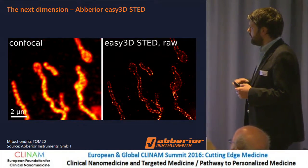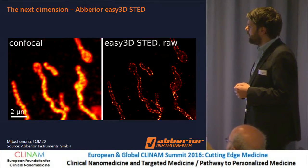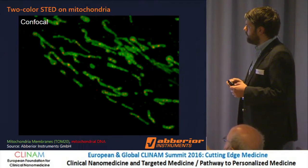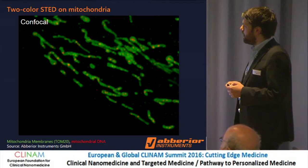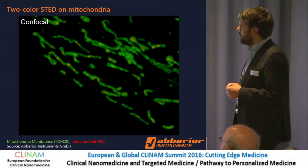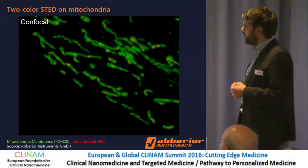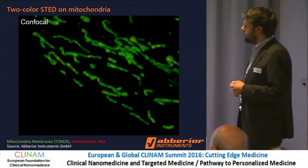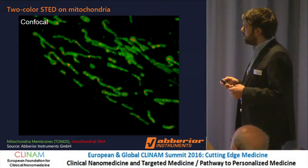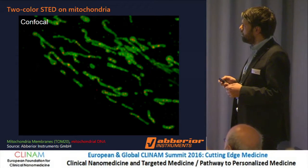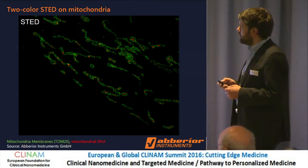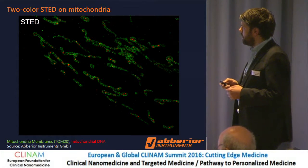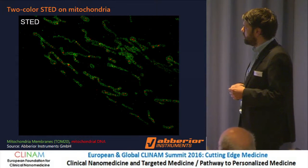So it's kind of hollow tubes in this view. And this can also be done in multi-color. Here is the membrane of the mitochondria and mitochondrial DNA labeled in green and red. And if you do the same thing in STED, you see greatly improved detail in the image. That looks quite nice.